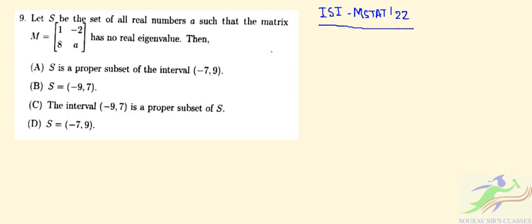Question number 9 says: let S be the set of all real numbers a such that the matrix with entries [1, -2; 8, a] has no real eigenvalue. We have to find which of the following options is true.